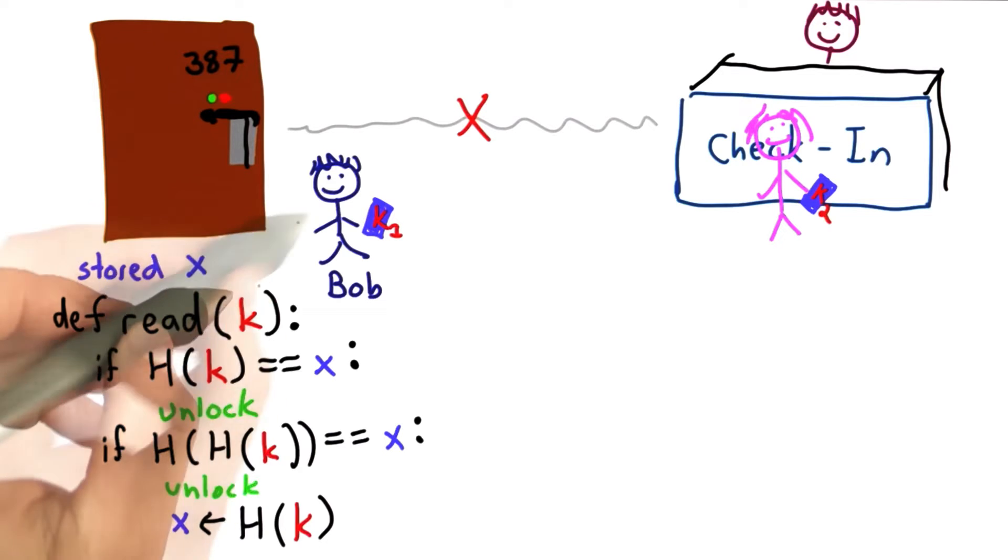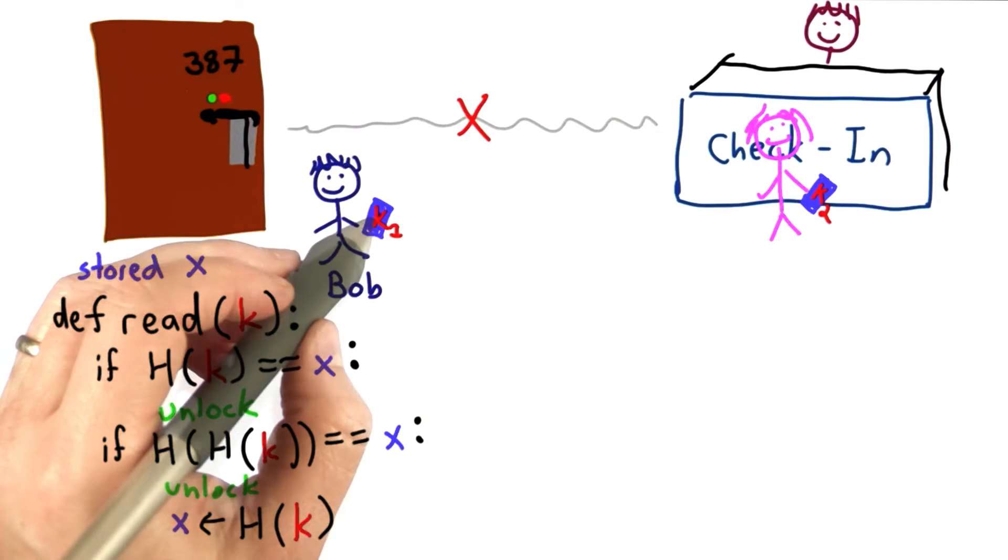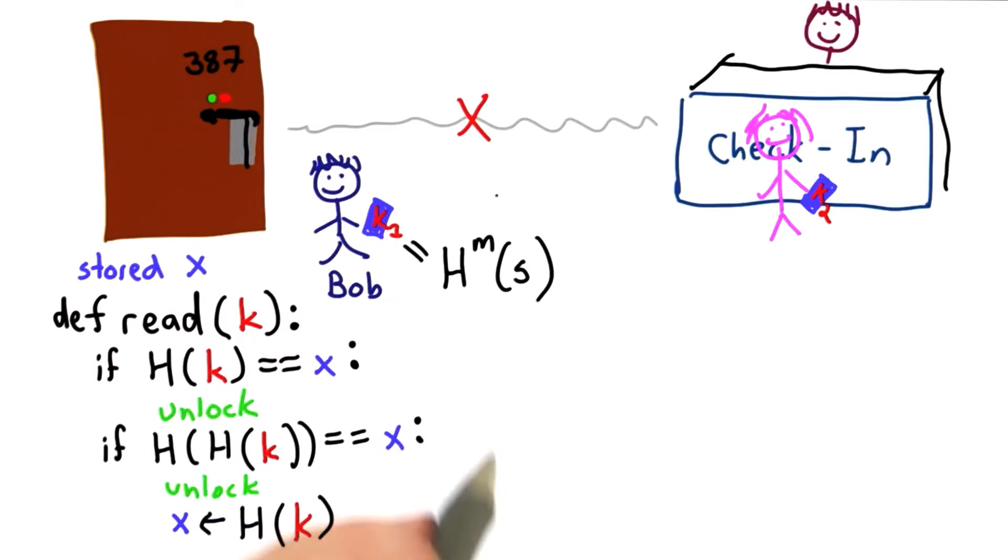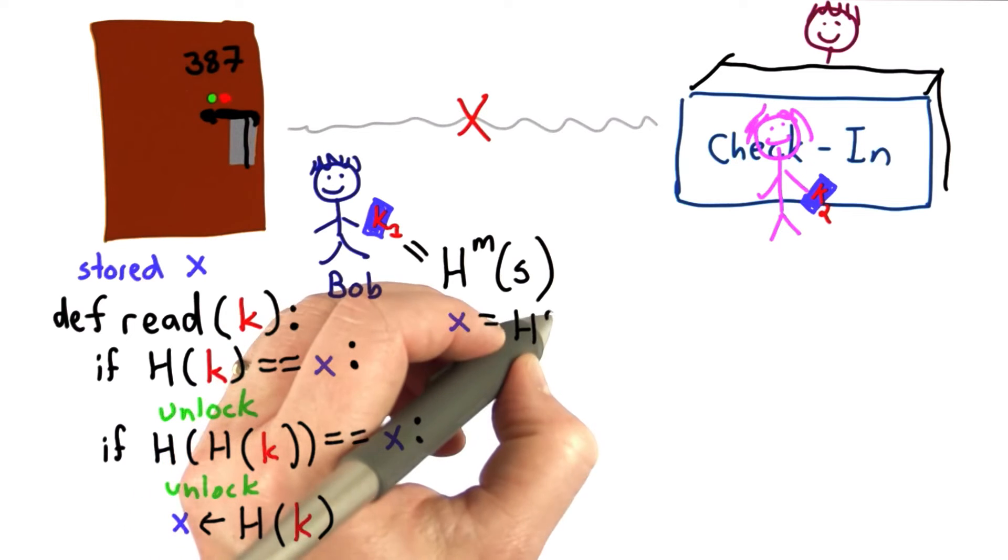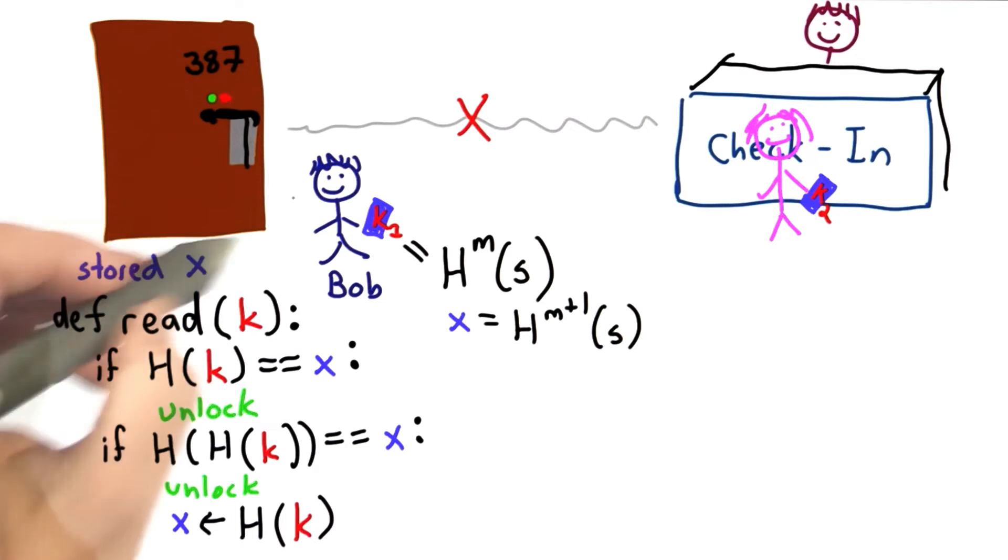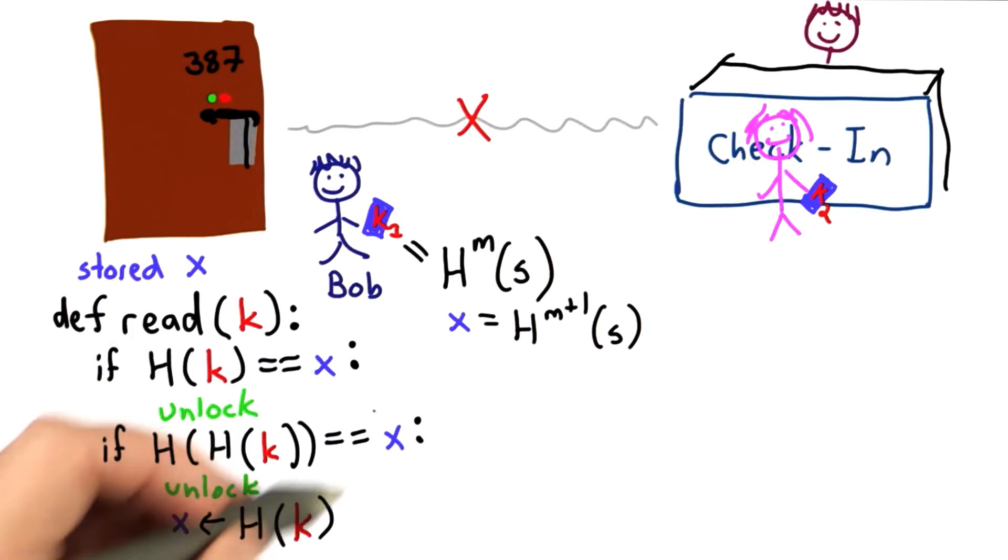What this means is that, well, if Bob's using the room first, his key is k1, and his key will have the value some number of hashes on some secret, and the value of x would be n plus 1 of those hashes, and Bob keeps opening the door going through this path through the code. There wouldn't really be a Python interpreter in the door. This could be done by something much simpler than having a full Python interpreter.